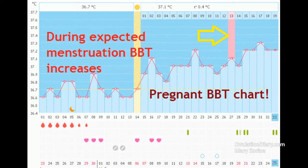When basal body temperature rises during pregnancy, it stably stays at the level of the second phase and often even higher. During the expected period, the chart is consistently high. This is how a pregnant BBT chart looks — with increasing and maintaining a high basal body temperature, and BBT indicators growing during the expected menstruation.